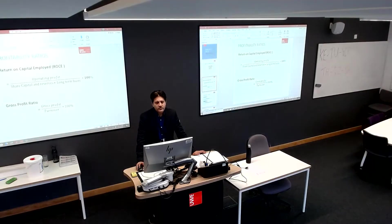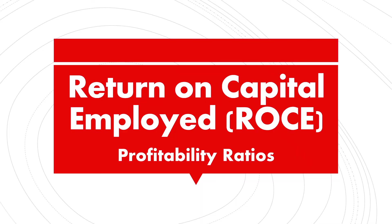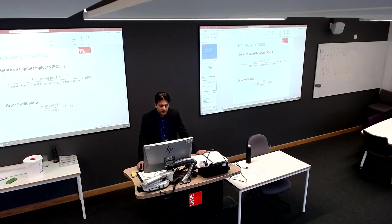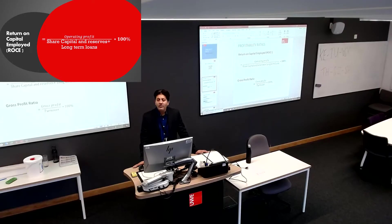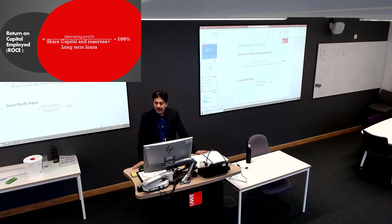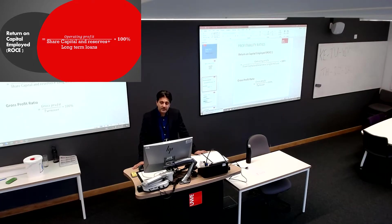The first ratio we are going to calculate is return on capital employed. This ratio has two parts: return and capital employed. By return we normally mean profit, and capital employed is the money which is invested to generate that profit.